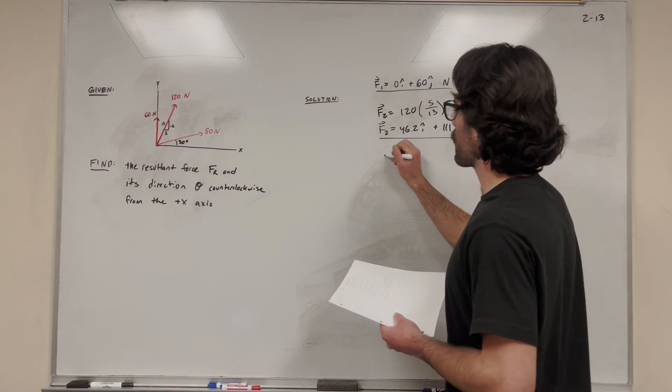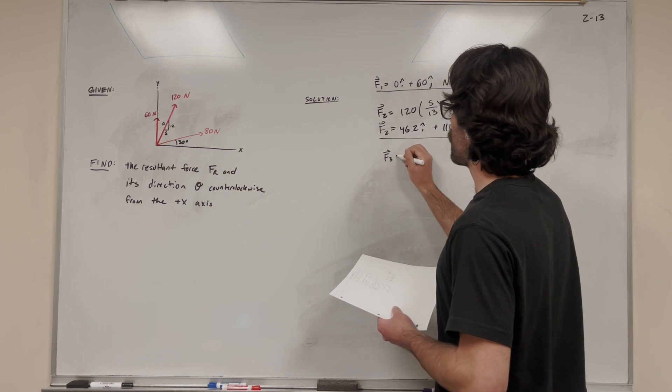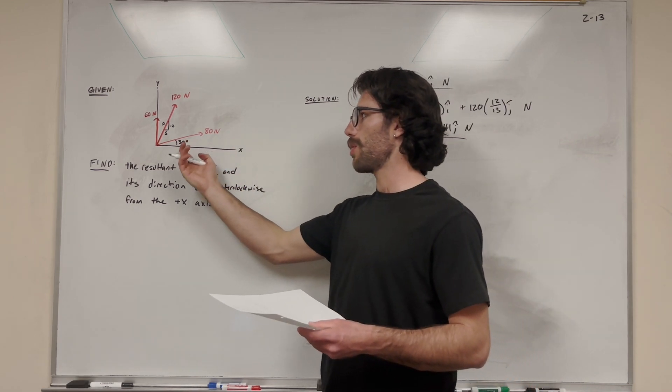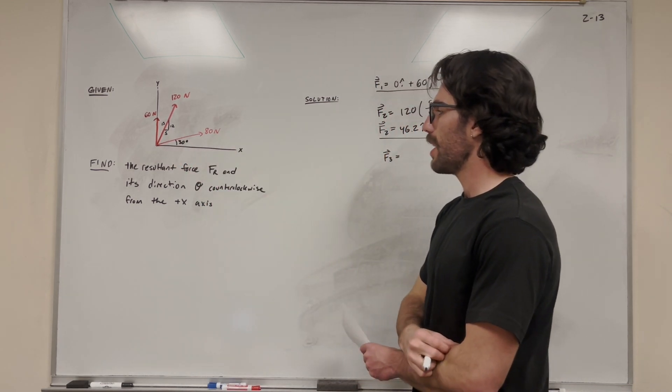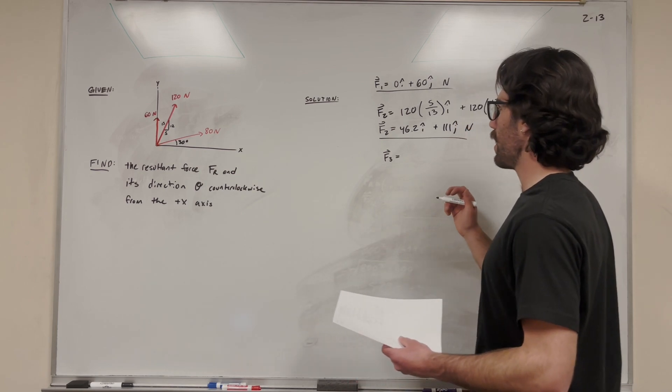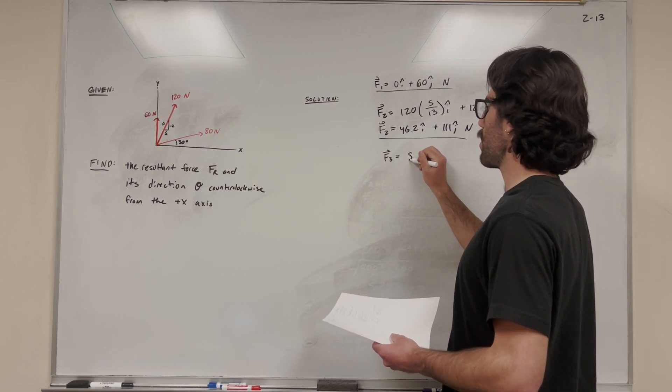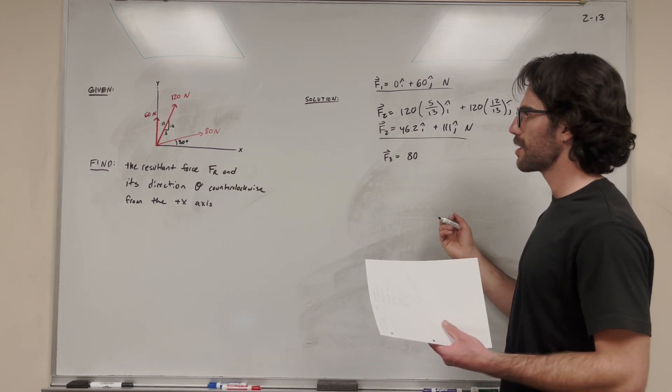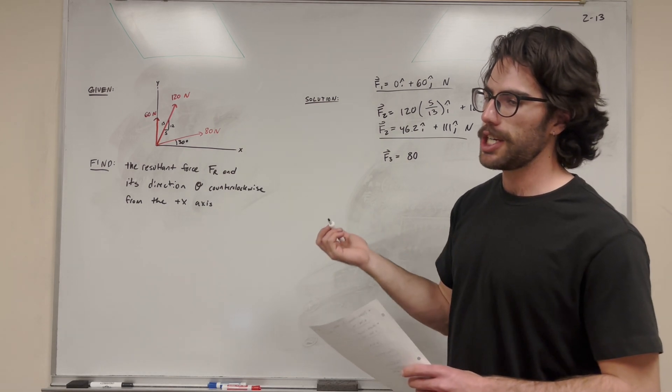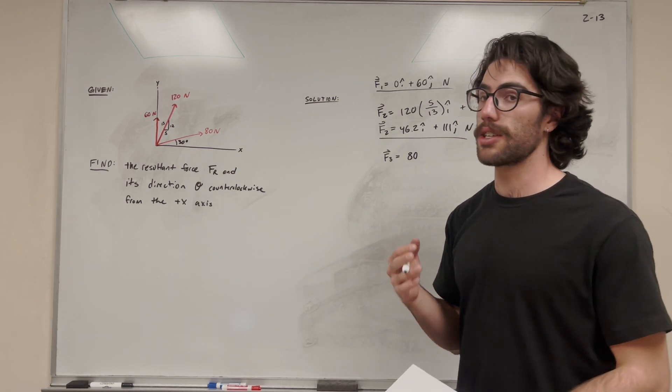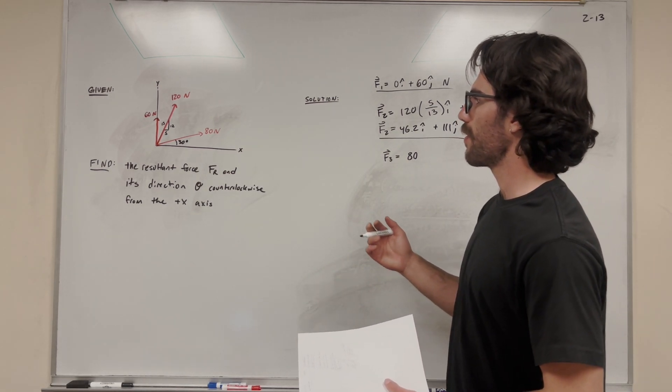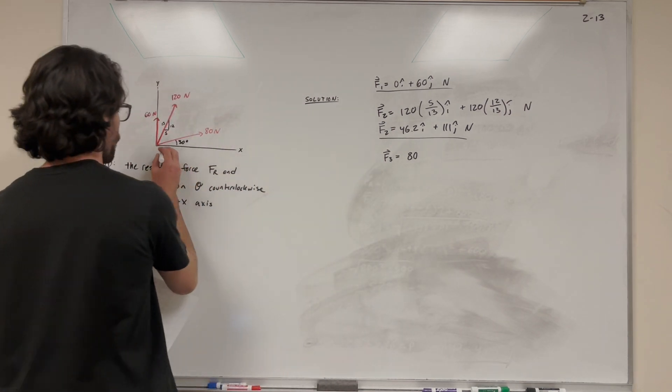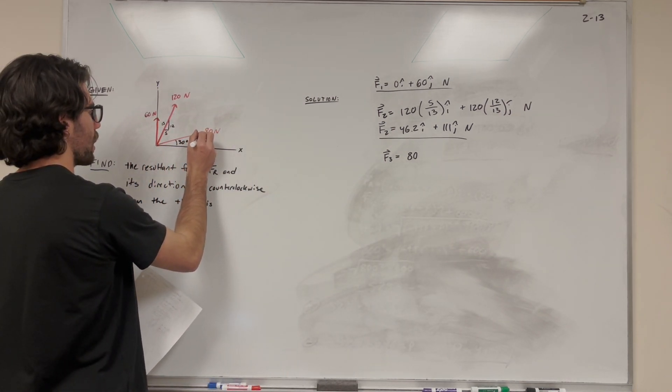Let's do it for force 3. So force 3 is equal to, so now we have an angle, we're not given a ratio. The angle is 30 degrees, so let's go ahead and do the same thing. Of course we're going to start with our magnitude, 80 newtons. But now we need to multiply it by a ratio. Now cosine or sine is a ratio. So if we want to find the x component, we're looking at the bottom here. We can make this kind of its own triangle, like this.